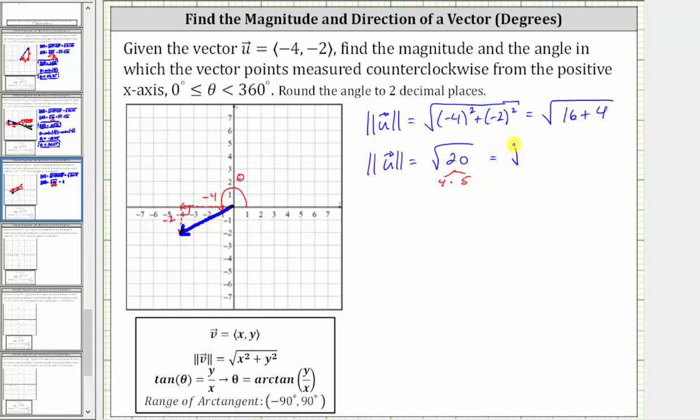The square root of 20 equals the square root of four times the square root of five. The square root of four is two, and therefore the exact magnitude of vector u equals two square root of five.